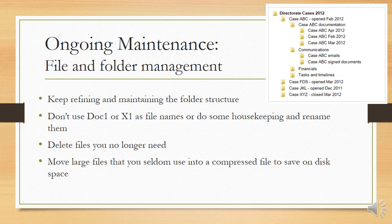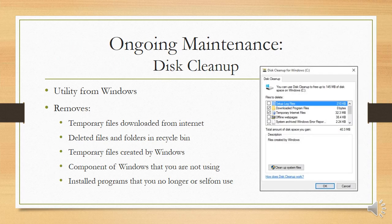Files you hardly ever use that are very large, you could compress and save on disk space. There is a facility in Windows called a utility — it's system software that does something useful for you. Disk cleanup removes all temporary files downloaded from the internet, deleted files in the recycle bin, temporary files created by Windows, components of Windows you're not using, and installed programs you no longer or seldom use. It clears up a lot of space on your hard drive.